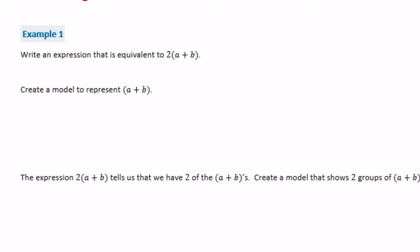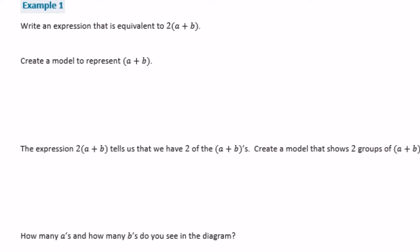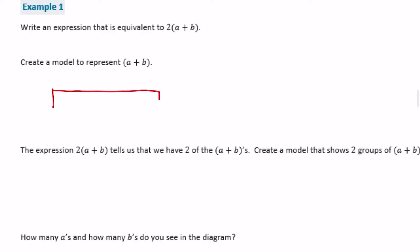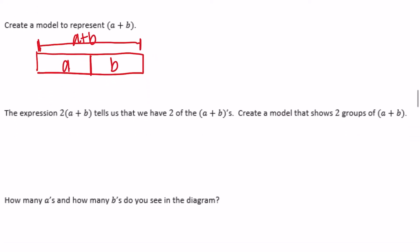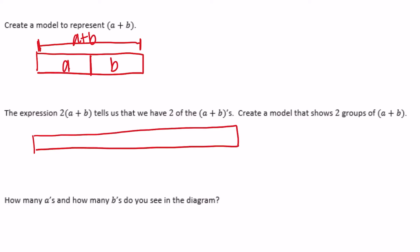Example 1: write an expression equivalent to 2 times (a plus b). We'll create a model first, then write the expression at the end. A model of a plus b shows one group of a and b. Since 2 times (a plus b) means we have two of those groups, we double it: one group of a and b, then another group of a and b.